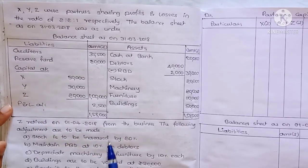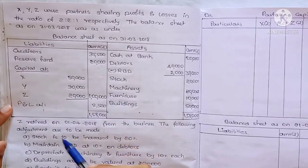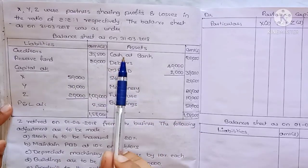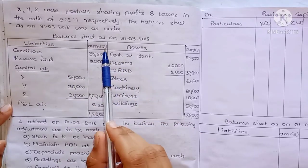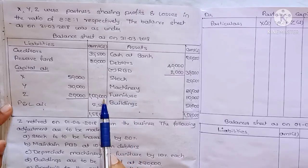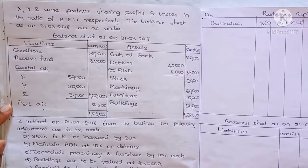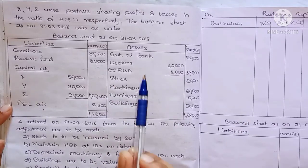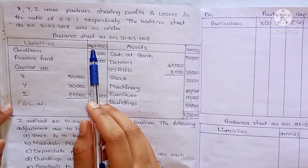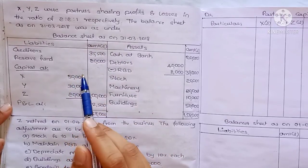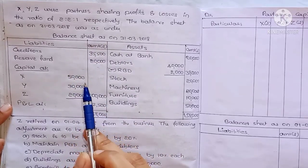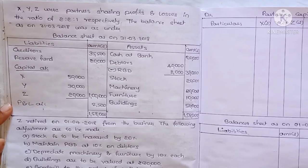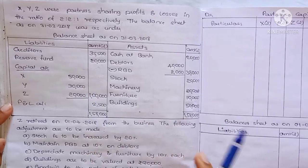Last session I talked about the retirement topic. There is one question about retirement topic, and that is without capital adjustment in most cases. That is why capital adjustment is less likely. Here is the first question of the paper without capital adjustment.